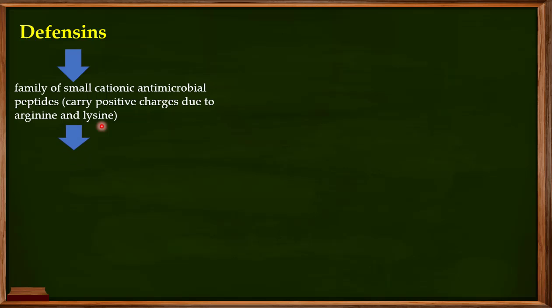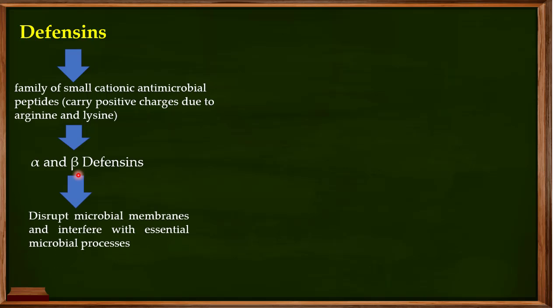Defensins come in two types: alpha defensins and beta defensins. In the primary granules of neutrophils you are going to find both of them. These defensins are responsible for the disruption of microbial membranes and they also interfere with essential microbial processes, which we are going to cover in this video.